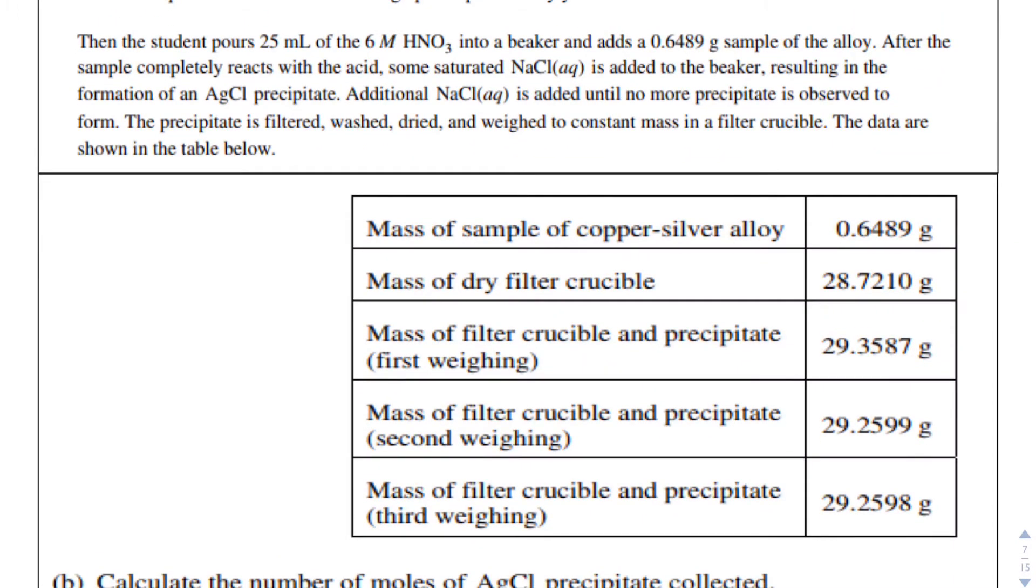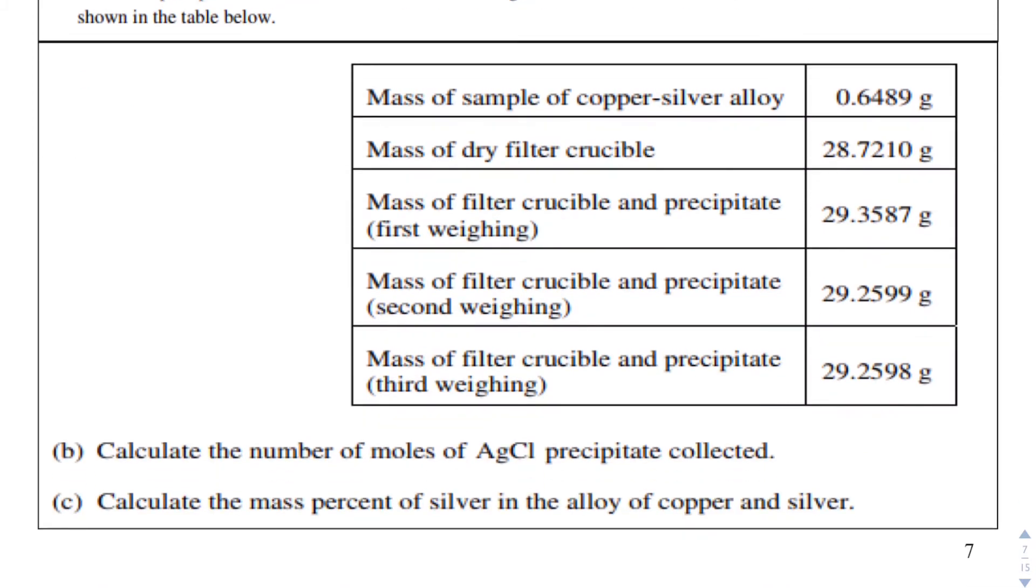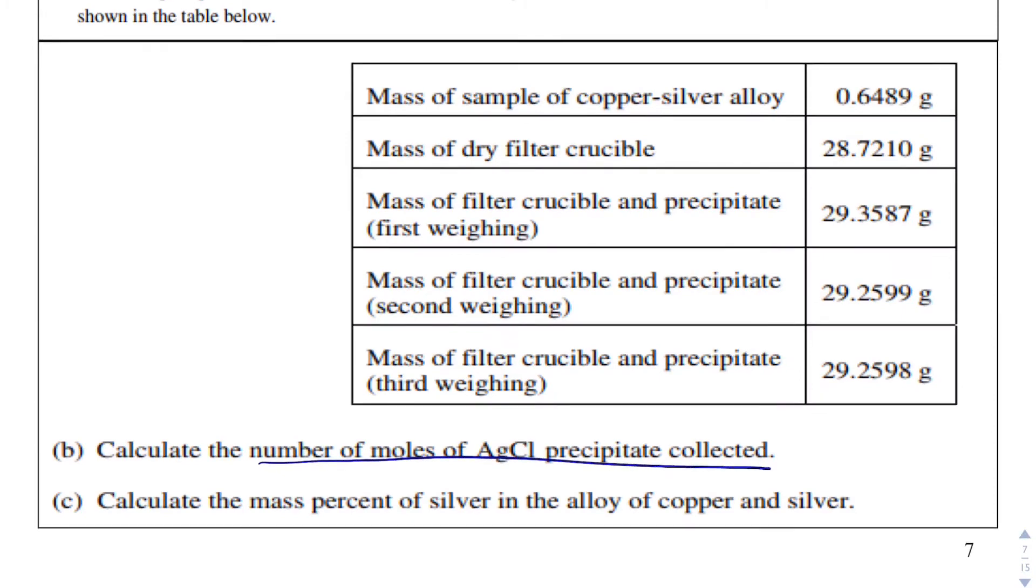The student pours 25 milliliters of 6 molar nitric acid into a beaker and adds a 0.6489 gram sample of the alloy. After the sample completely reacts with the acid, some saturated sodium chloride is added to the beaker, resulting in the formation of silver chloride precipitate. Additional sodium chloride is added until no more precipitate is observed to form. The precipitate is filtered, washed, dried, and weighed to a constant mass in a filter crucible. The data are shown in the table. Don't let all those fancy words get the best of you. We're just going to work through it step at a time. In part B, calculate the number of moles of silver chloride precipitate collected. We're going to use the last weigh and subtract away the crucible.